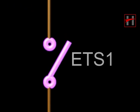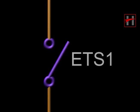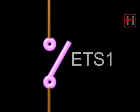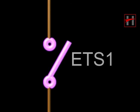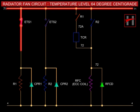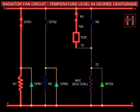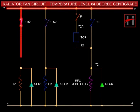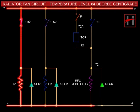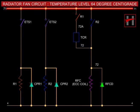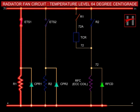The temperature of the diesel engine is sensed by the sensor — engine temperature switch, or ETS — in the water pipeline. When the temperature reaches 64 degrees centigrade, ETS-1 closes and the R1 coil is energized. The interlock of R1 closes; the current flows through cable number 72A, TCR, cable number 72, and energizes the ECC coil.